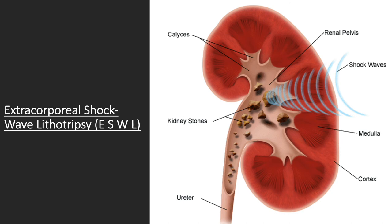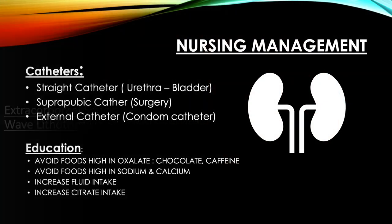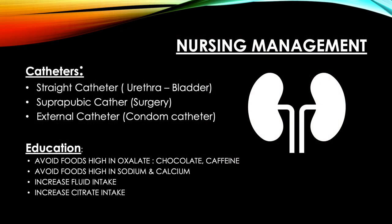Due to the pain associated with kidney stones, an EKG machine should be used to monitor heart and respiratory rate to prevent cardiac and respiratory abnormalities such as tachycardia and tachypnea. Normal heart rate is 60 to 100 beats per minute, and normal respiration rate is 12 to 20 respirations per minute.